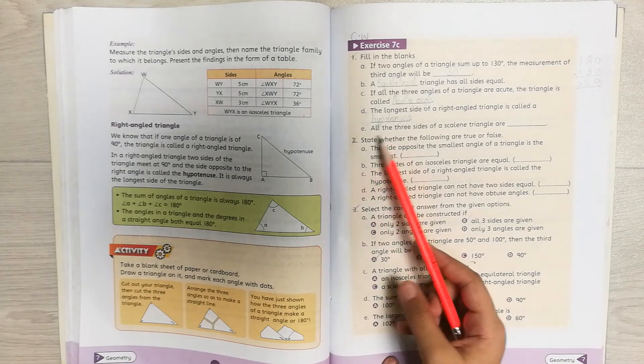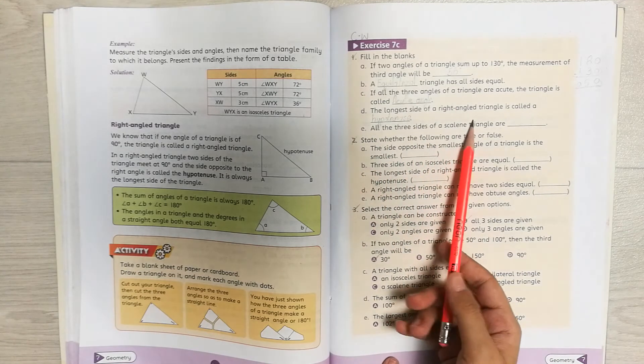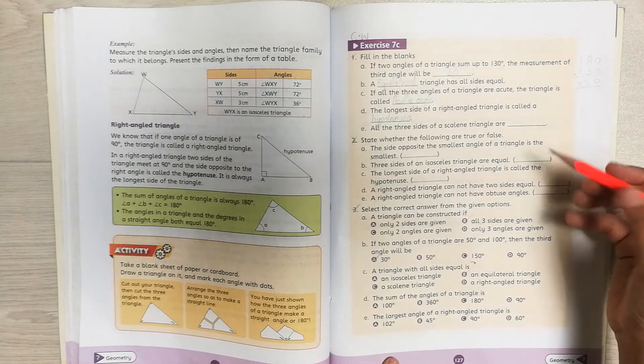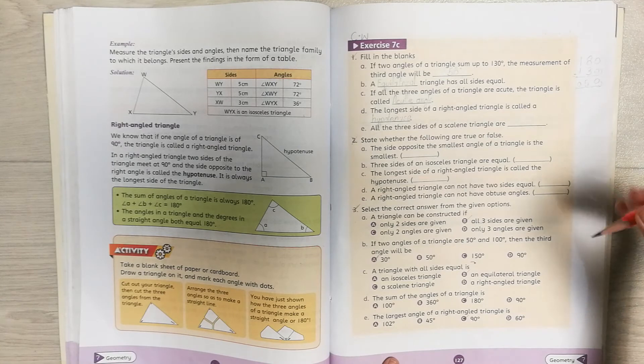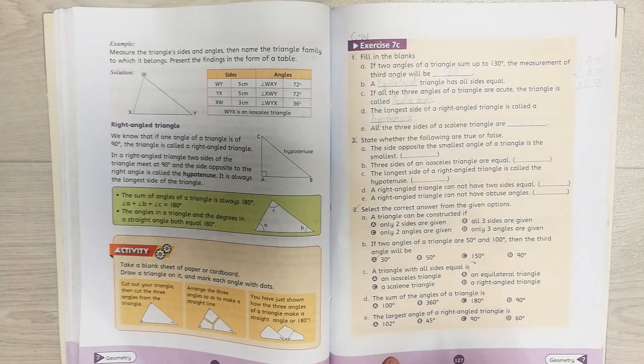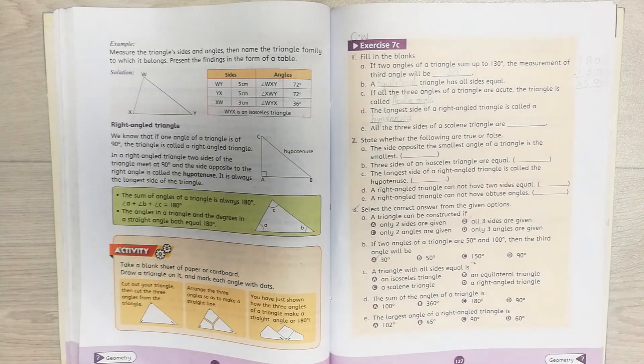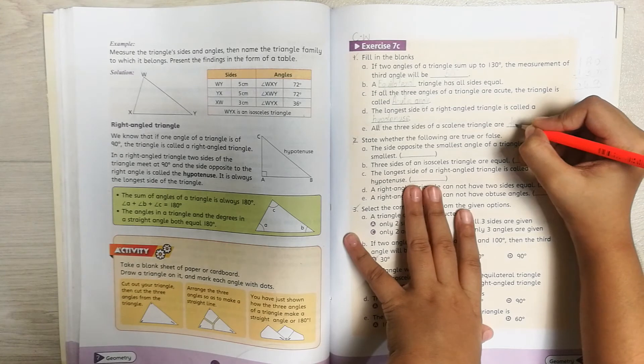Now let's go to the next part. The last part is part E. All the three sides of a scalene triangle are blank. I also told you about this in the last video. The scalene triangle has all different sides, and the name was scalene.